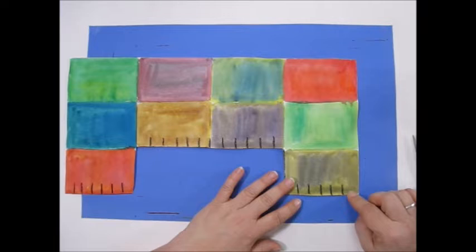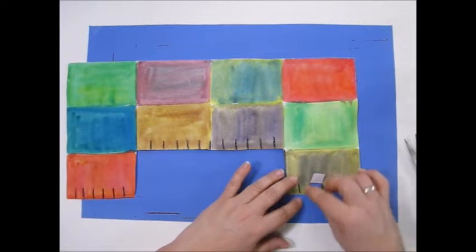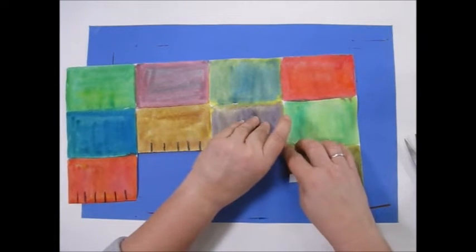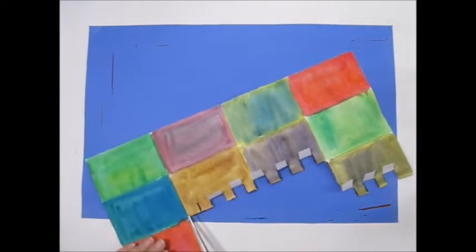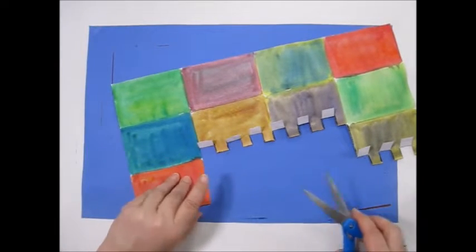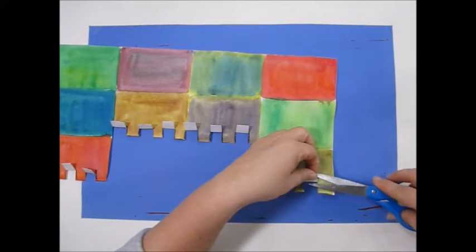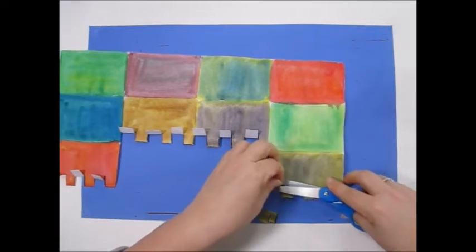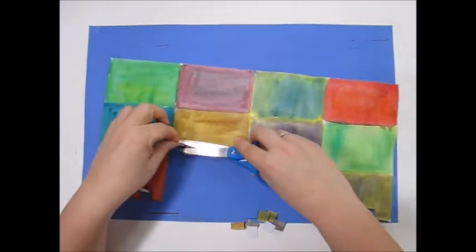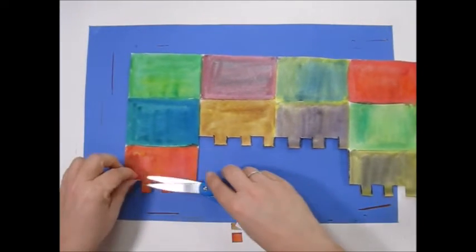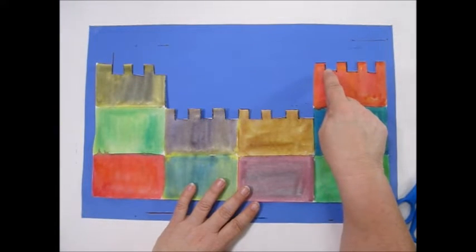I'm going to take my scissors and cut those little marks. Now I'm going to keep one down and fold one up, and alternate the pattern: down, up, down, up, down, up. Now I'm going to take my scissors and cut the ones that are up. That's the castle line that you see on many castles.